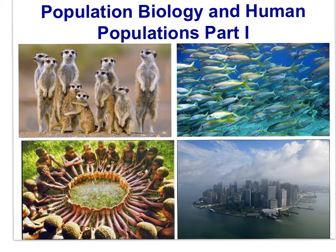Population biology and human populations part one introduces the J and S shaped growth curves typical of populations. The emphasis will be on the nature of exponential growth and the density dependent factors that result in the S-shaped logistic curve.